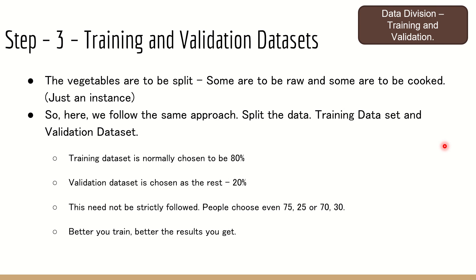The third step is the training and validation data set split. Just like sorting vegetables into different categories — some eaten raw, some cooked — we split the data into training and validation sets. We need to split it into training and validation data. Normally 80% would be the training data set and 20% would be the validation data set. This need not be strictly followed; it can be 75/25 or 70/30. But remember: the better you train, the better results you get.